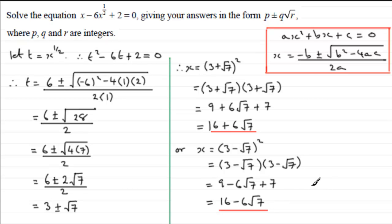So we've got two answers then, 16 plus 6 root 7 and 16 minus 6 root 7, and we've got it in this form. As I say, p is going to be 16, q will be the 6 because you can have plus or minus q so it'll be plus or minus the 6, and r will be the 7.